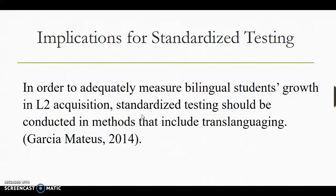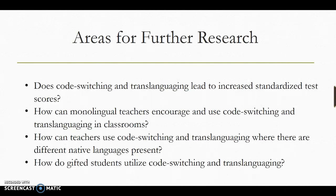What are the implications for standardized testing? In order to adequately measure bilingual students' growth in L2 acquisition, standardized testing should be conducted in methods that include translanguaging. Areas for further research include: Does code-switching and translanguaging lead to increased standardized test scores? How can monolingual teachers encourage and use code-switching and translanguaging in classrooms? How can teachers use code-switching and translanguaging where there are different native languages present?